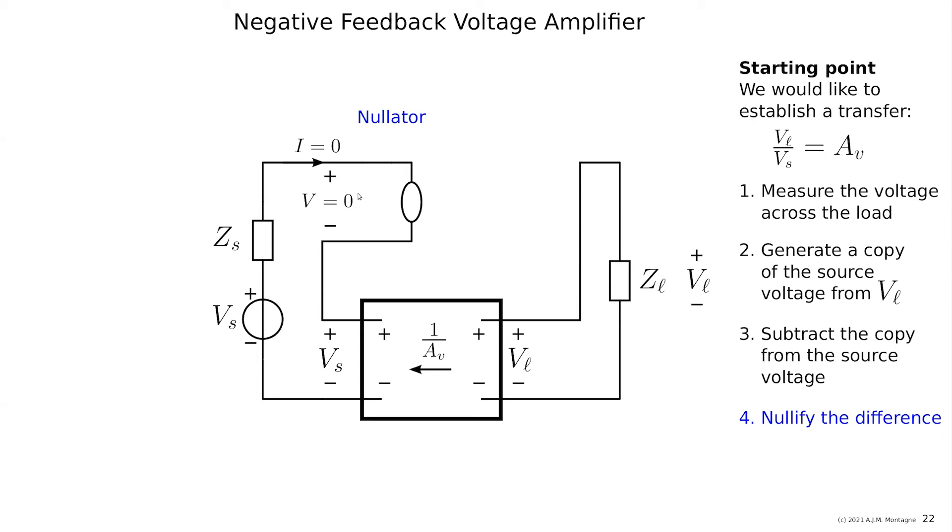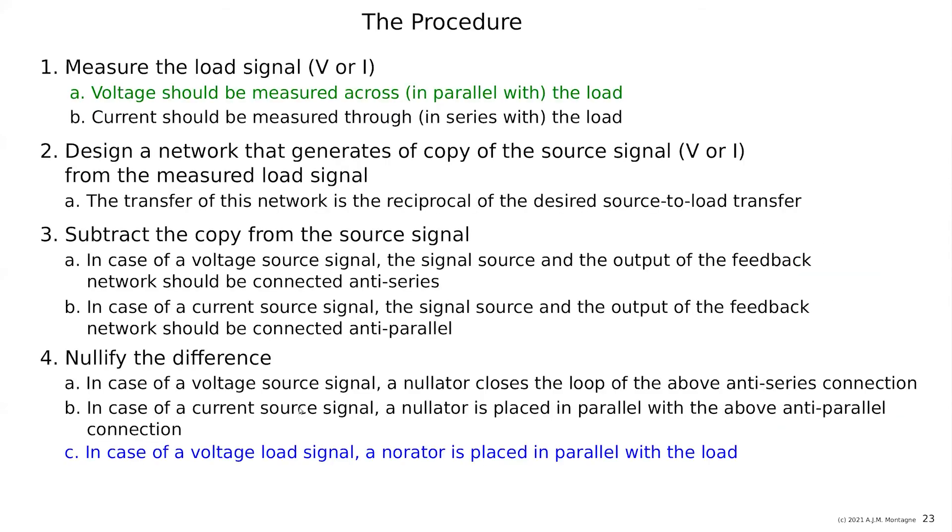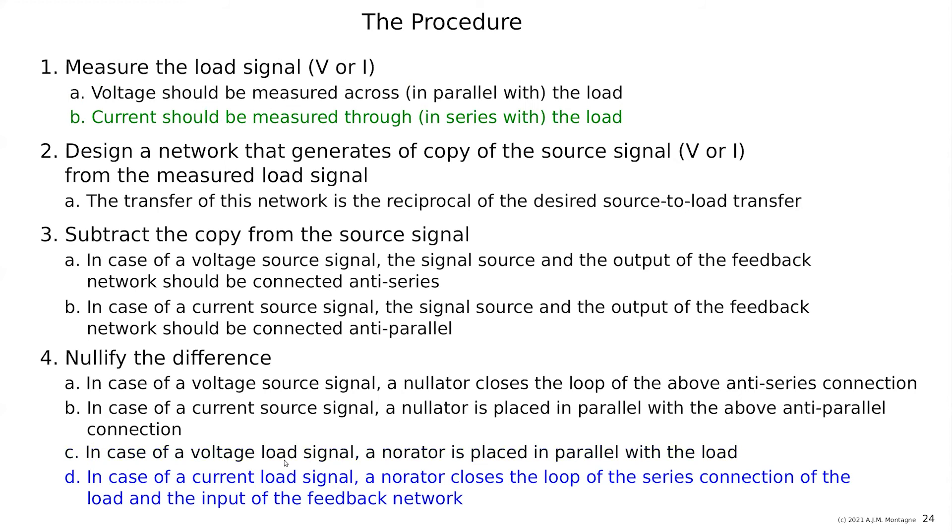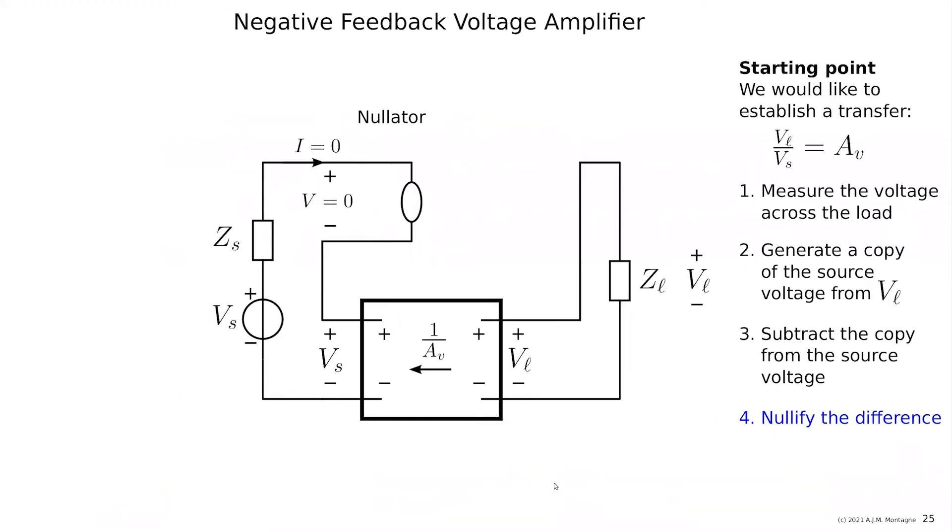So we have to provide another degree of freedom. So a norator is placed in parallel with a load in case of a voltage load signal, or it is closing the loop, exactly the opposite as here, closing the loop in case of a current output. So here we have a voltage output and across the load I place my norator and this combination together is called a nullor.